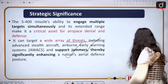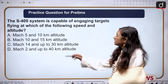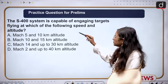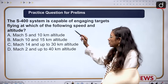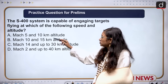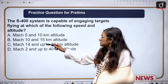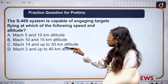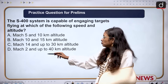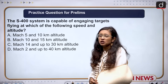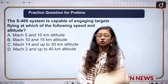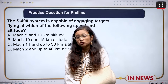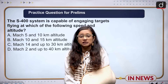Now, here is a practice question for prelims: The S-400 system is capable of engaging targets flying at which of the following speed and altitude? Option A: Mach 5, up to 10 kilometer altitude. Option B: Mach 10, up to 15 kilometer altitude. Option C: Mach 14, up to 30 kilometer altitude. Option D: Mach 2, up to 40 kilometer altitude. We already discussed this — you can answer in the comment section.